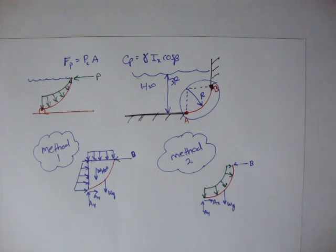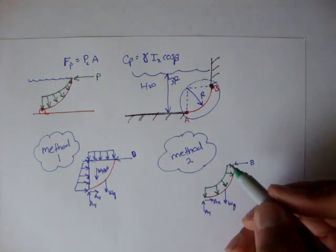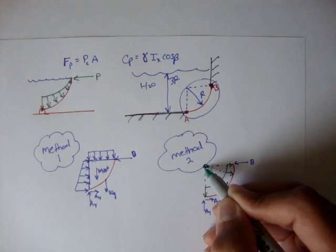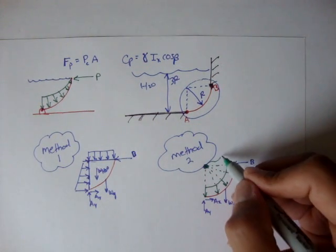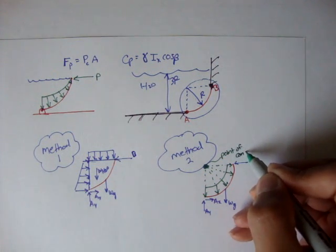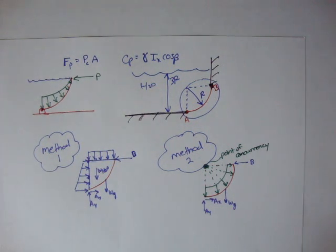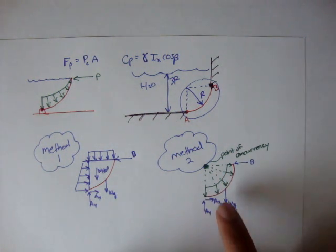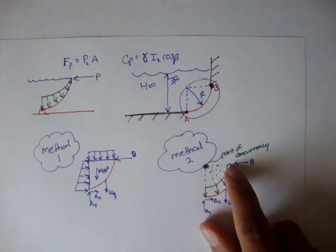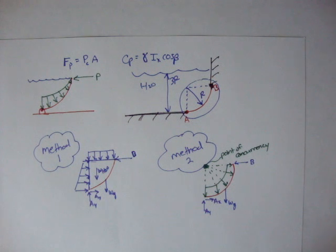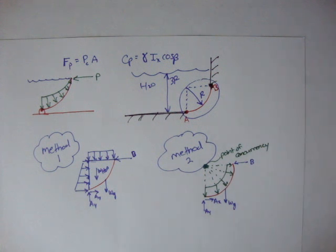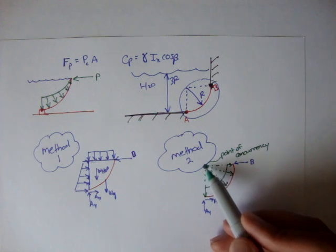Concurrent forces, if you remember from statics, are forces that all meet at one point. If you were to draw each of these pressure forces out, they all meet at one point up here, called the point of concurrency. For these types of problems, we'll be looking at only concurrent forces on curved surfaces. What's neat is that we can replace this entire pressure distribution with resultant forces at the point of concurrency.